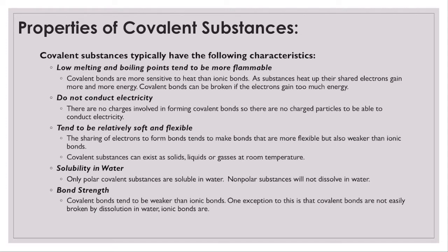Covalent bonds tend to be weaker than ionic bonds because they're more fragile when it comes to heating. One exception is that covalent bonds are not easily broken by dissolution in water, whereas ionic bonds are. Many ionic substances dissolve in water with their particles moving away from each other. With covalently bonded substances, even though sugar can dissolve, the sugar molecule itself is not actually being pulled apart — that's an exception when talking about bond strength depending on whether the substance is dissolved in water.